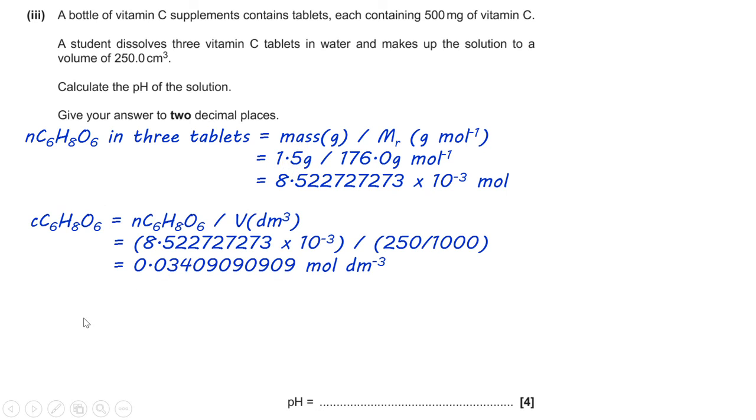So, I've worked out a number of moles of vitamin C in three tablets. Now, I want the concentration of vitamin C. So, I divide that number by the volume, which is 250 centimeters cubed over a thousand, and I get the concentration. So, now I can start putting numbers into my Ka expression that I constructed before.